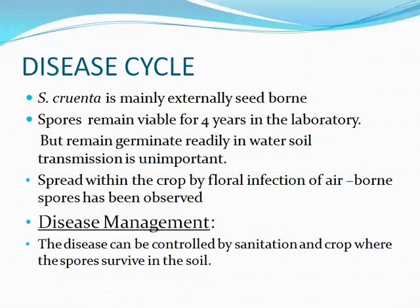In the disease cycle, Sphacelotheca cruenta is mainly an externally seed-borne pathogen. It remains viable for four years in the laboratory but germinates readily in water; soil transmission is unimportant. It can spread within the crop by floral infection of airborne spores, particularly when the panicle has emerged.